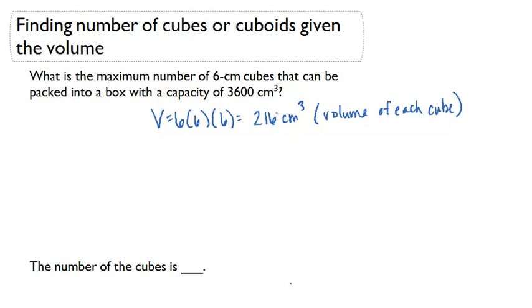If we want to figure out how many of these fit in 3,600, we would just take 3,600 and divide by 216. If we do that, that gives us 16 and two-thirds.